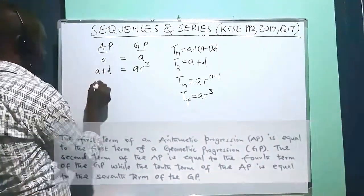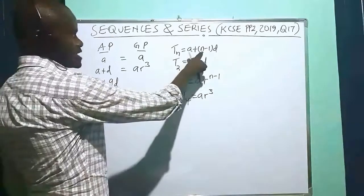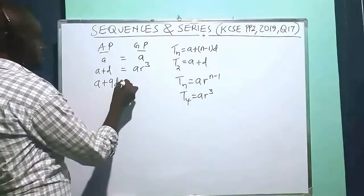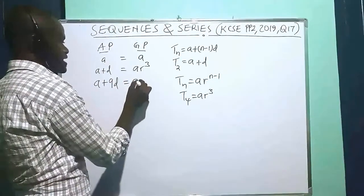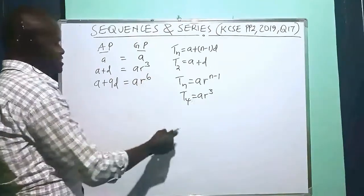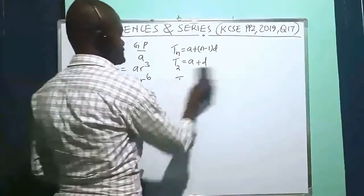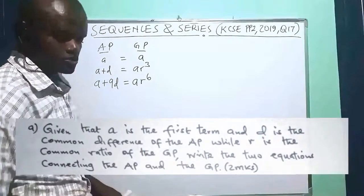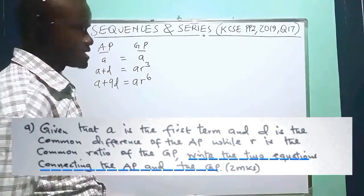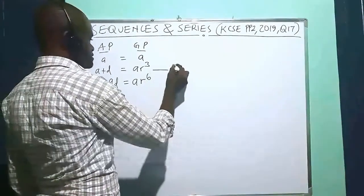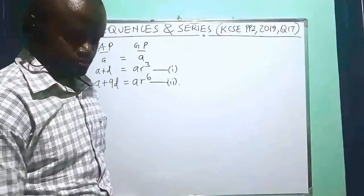The tenth term of the AP is given by A plus 9D (since 10 minus 1 is 9). That should be equivalent to the seventh term of the GP, which is A·R^6 (since 7 minus 1 is 6). So for part A, the two equations connecting the AP and the GP are: equation one is A + D = A·R³, and equation two is A + 9D = A·R^6.